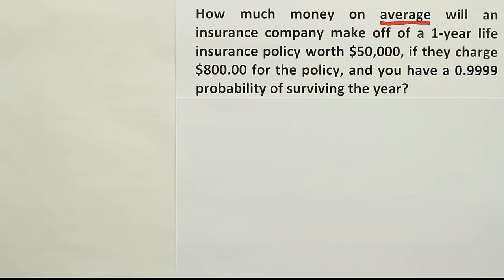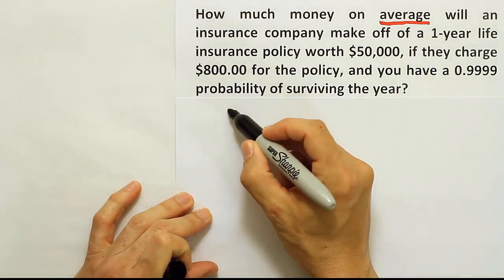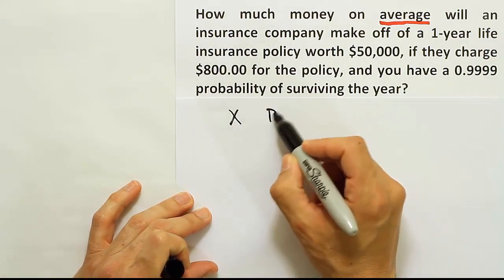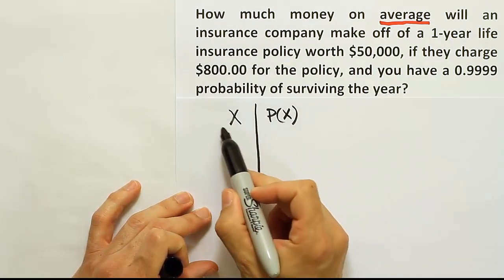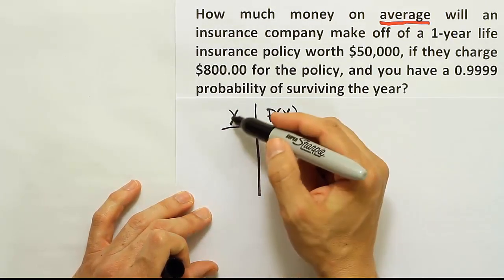So how much money on average will an insurance company make off a one-year life insurance policy worth $50,000? Okay, so whenever you think it's expected value, the first thing you should do is set up a table. And the table will list basically an X column and a P of X column. P of X being the probability of an event, X being the event.